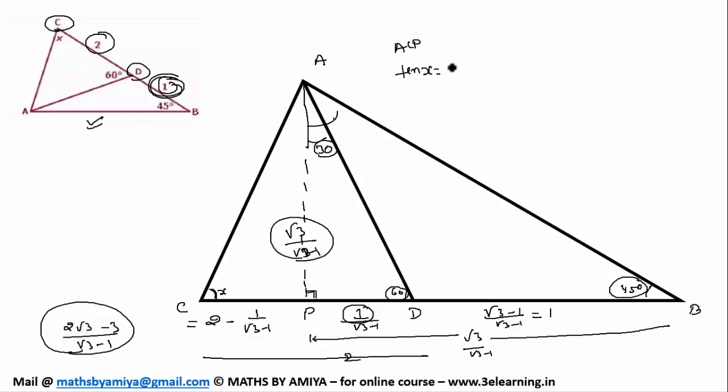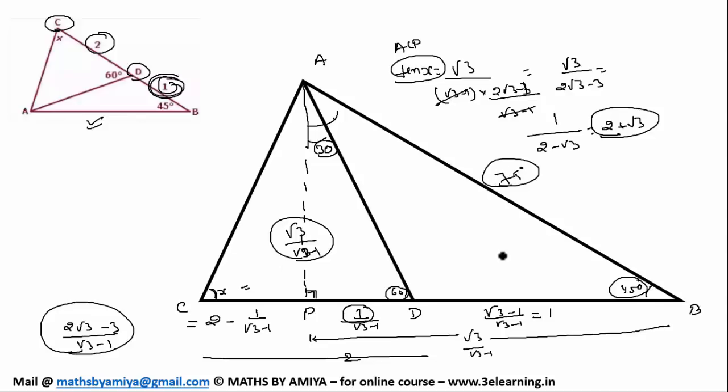So why not apply tan X in triangle ACP. Tan X is the perpendicular that is root 3 upon root 3 minus 1, divided by base upon root 3 minus 1. They cancel out. So this one is nothing but root 3 upon 2 root 3 minus 3. If we cancel out root 3, this one is nothing but 1 upon 2 minus root 3. Or we rationalize, this one is nothing but 2 plus root 3. And whenever we have tan X is equal to 2 plus root 3, X is nothing but 75 degree. And this one is my answer.